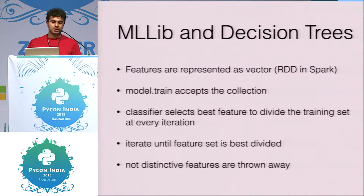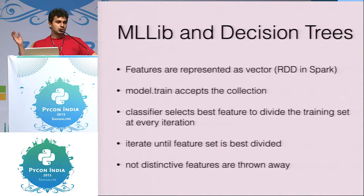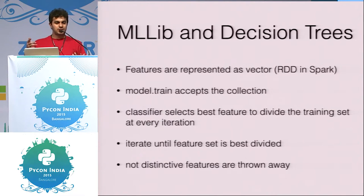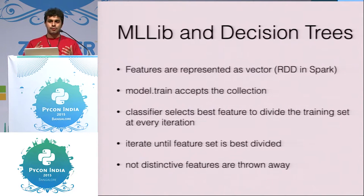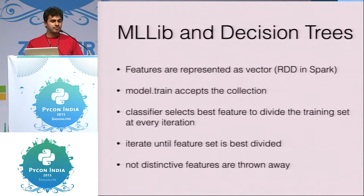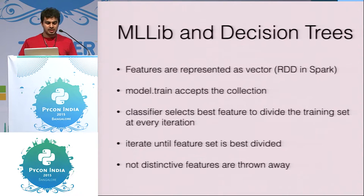We leverage those features in MLlib, taking about 10–12 features and putting them in a binary (one-hot) vector. The model trains and produces a clear decision tree: if this condition, then malicious; if not, then benign. For someone unfamiliar with decision trees, it also tells you which features are useless — for example, if a password field appears equally in both benign and phishing pages, that feature provides no discriminating power and should be discarded.